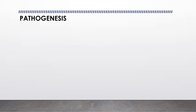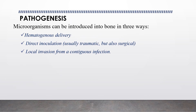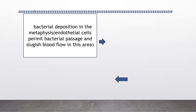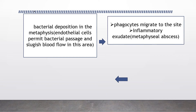Regarding the pathogenesis of osteomyelitis: microorganisms can be introduced into bone in three ways, but the most common is hematogenous delivery. The other two mechanisms are direct inoculation or local invasion from a contiguous infection. Bacterial deposition occurs in the metaphysis, where endothelial cells permit bacterial passage and sluggish blood flow. Phagocytes migrate to the site, causing inflammatory exudate at the metaphyseal site and metaphyseal abscess formation.